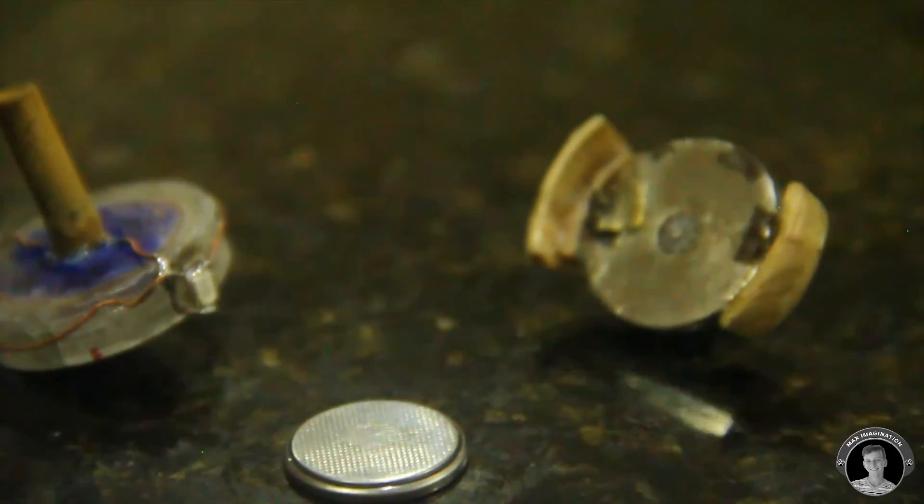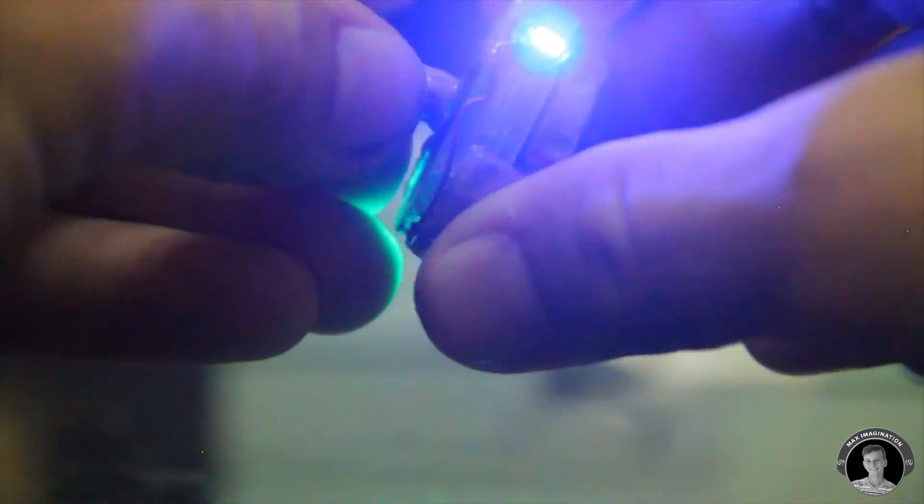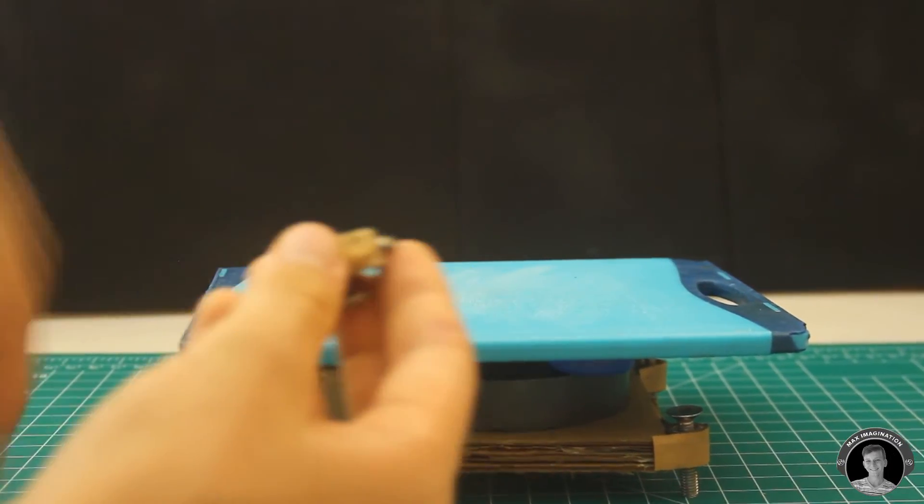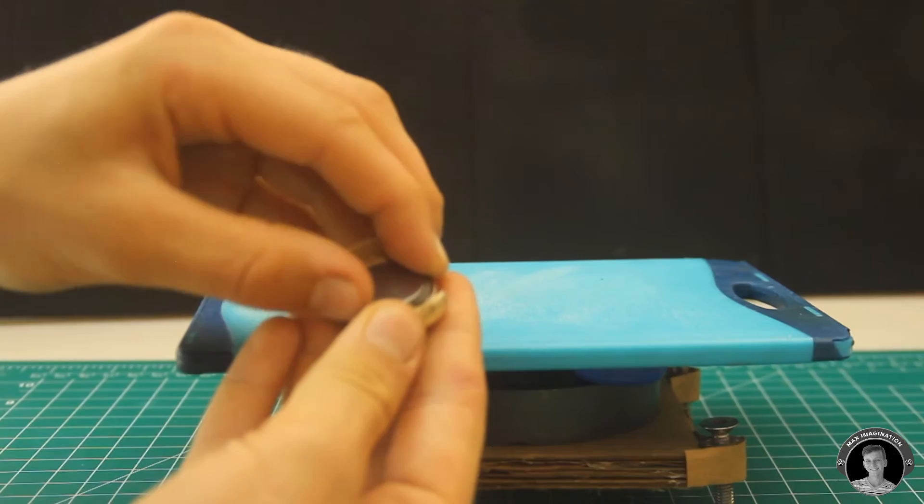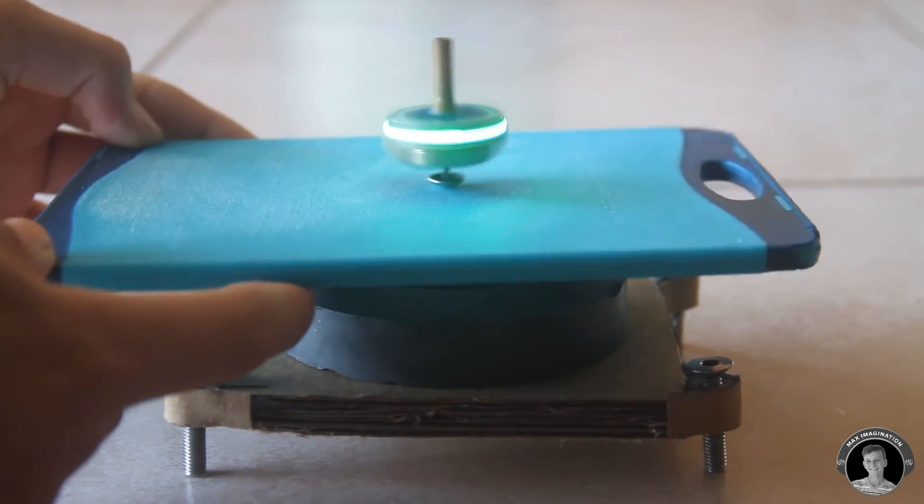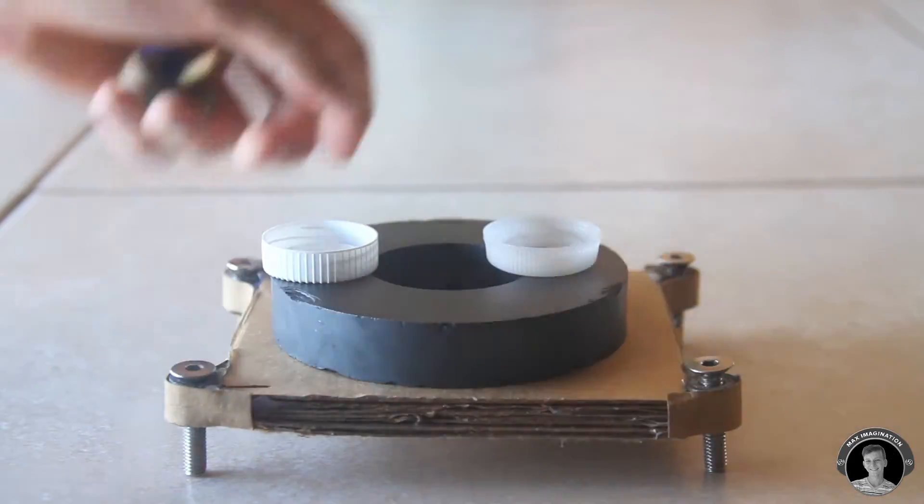Because of the lithium button cell battery within the LED Levitron, initially it made it pretty hard to keep centered in the levitating spinning top, and would sometimes move around inside after a few crashes.